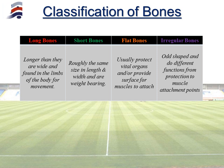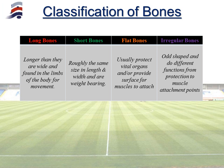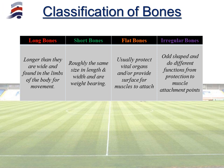Long bones are exactly that — they are longer than they are wide and they are found in the limbs of the body for movement, so in places such as the arms and the legs. Short bones are roughly the same size in length and width and they are primarily there for weight bearing. Flat bones are there to protect vital organs but they also provide a nice flat surface for muscles to attach to. And lastly we have irregular bones, which are odd shaped and do different functions such as protection but also muscle attachment.